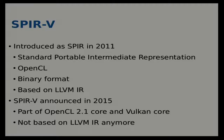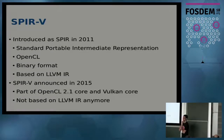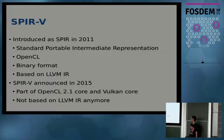Then we have SPIR-V. It was initially introduced as just SPIR for OpenCL — in this case it's a binary format, which solves the privacy problem. Initially it was based on LLVM, and then SPIR-V was announced in 2015 and became part of OpenCL 2.1 and Vulkan — that's probably the reason they added the 'V'. At that point it stopped being based on LLVM and became its own spec.